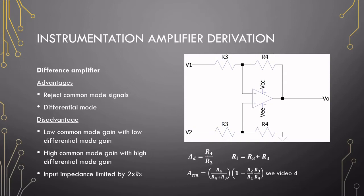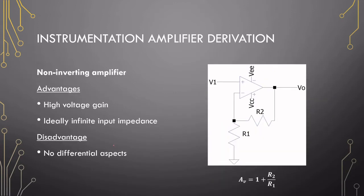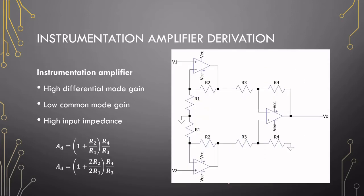This configuration can have differential mode, and as discussed in video 4, the common mode gain is dependent on the resistors — high tolerance gives high common mode gain, low tolerance gives low common mode gain. What if we add some amplifiers to our difference amp? The non-inverting amplifier has the advantage of high voltage gain and ideally infinite input impedance, but it has no differential aspects. To combine the two, we can place one of these non-inverting amplifiers at the input of each of the difference amplifier inputs.